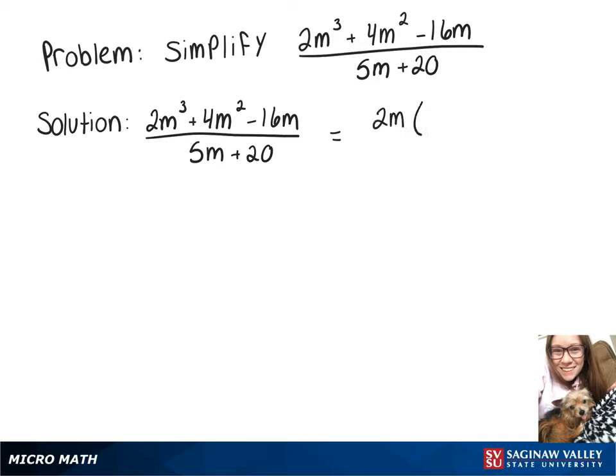So first, we can factor 2m out of the top, which leaves m squared plus 2m minus 8.